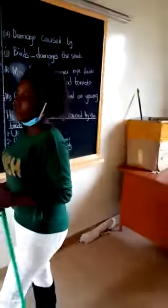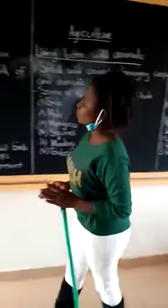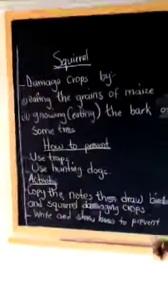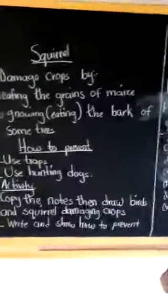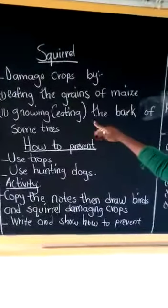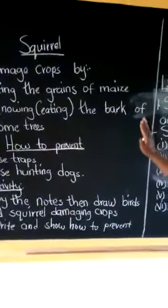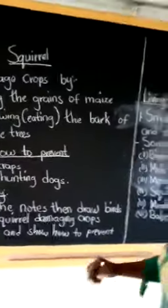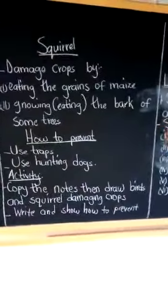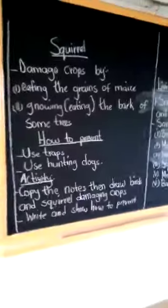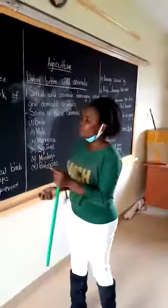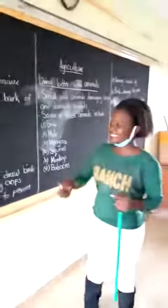Another animal that we are going to look at is squirrel. Squirrel damages our crops. Squirrel always eats the grains, maize. Then, it always eats the bark of some trees. You will find that on some trees, the squirrel has eaten its bark.